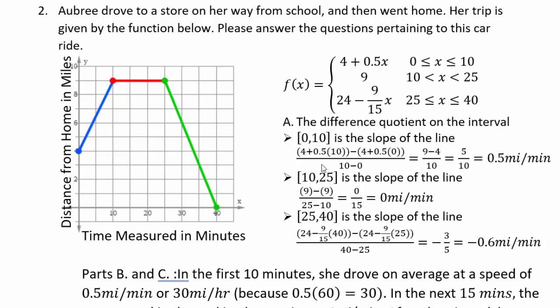If you compute the average, which is difference quotient between 0 and 10, you will see it's half a mile per minute, which is the speed at which Aubrey drove from school to the store. Then Aubrey was stopped. So speed was zero. And so the distance didn't change. Then coming home all the way from 25 minutes to 40 minutes, which is 15 minutes. So in 15 minutes, you traveled from 9 miles to zero. So 9 miles in 15 minutes or three fifths or 0.6 miles per minute. It's negative because now the distance is reducing towards the home.